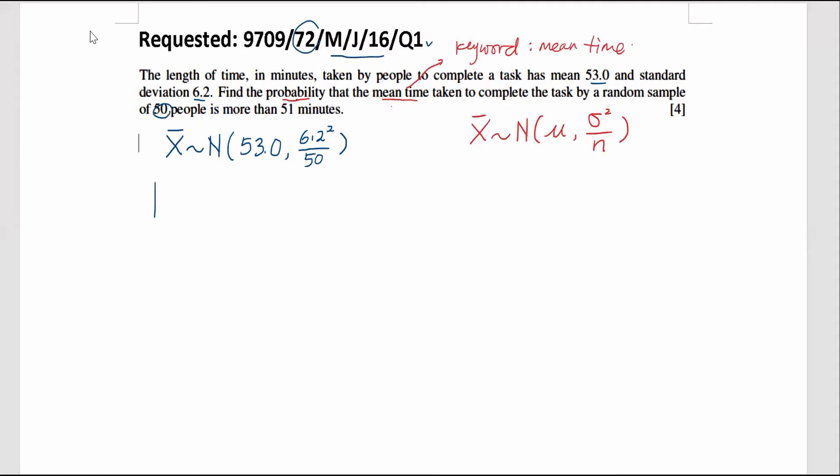So to find the probability of the mean time more than 51, first step, we have to carry out standardization. So it becomes Z. And the working is like this: 51 minus the mean divided by the standard deviation. The standard deviation should be written as 6.2 divided by square root 50, because we need to square root the variance to get the standard deviation.